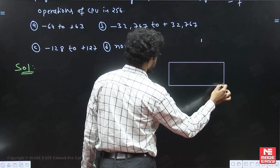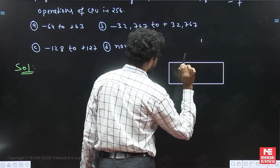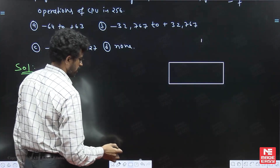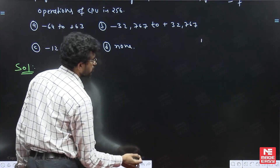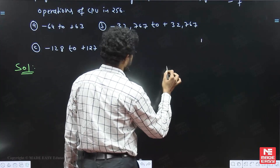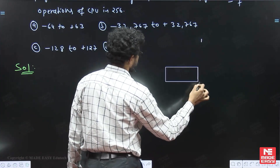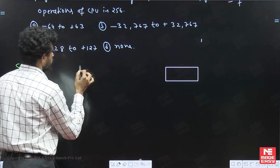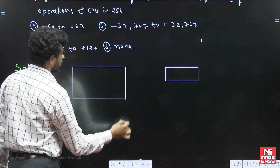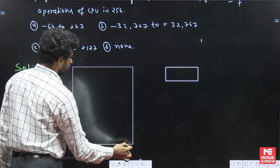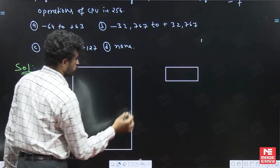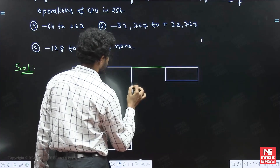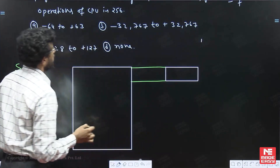This is the instruction. The instruction is present in memory and is brought into the microprocessor. The microprocessor has different registers. This instruction is present in the memory.